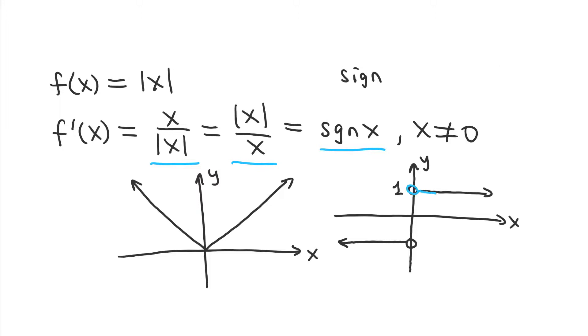If you give it a positive value, anything greater than zero, it's going to give you one. If you give it a negative value, then it's going to give you negative one. And then, of course, in this case we're not including zero in our domain, because the absolute value function is not defined at zero.